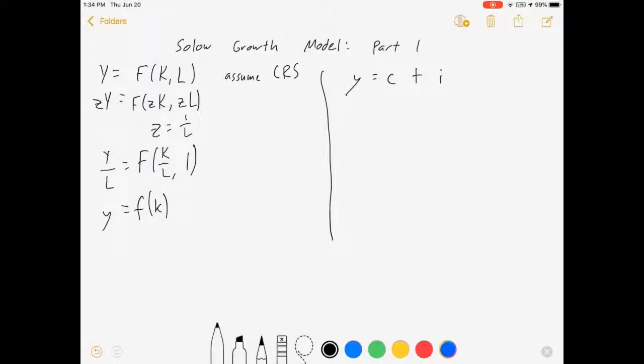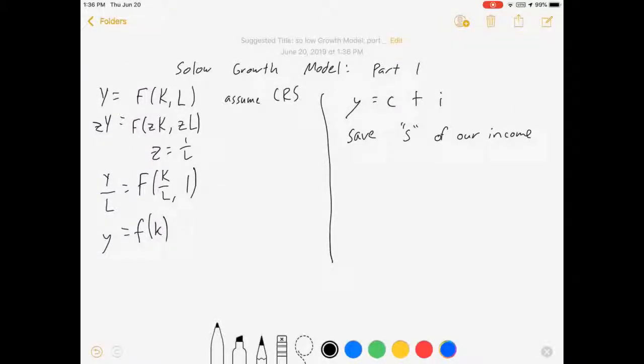We assume in this model that we save a ratio s of our income. And this means that our consumption is equal to 1 minus s times y which is 1 minus s times f of little k. And our investment per worker is equal to s y which is equal to s times f of little k.